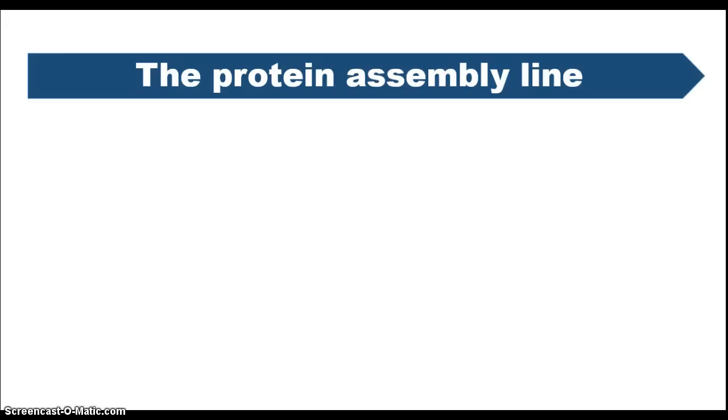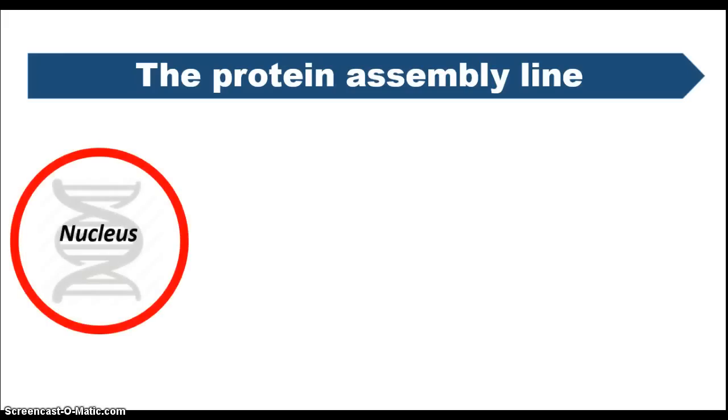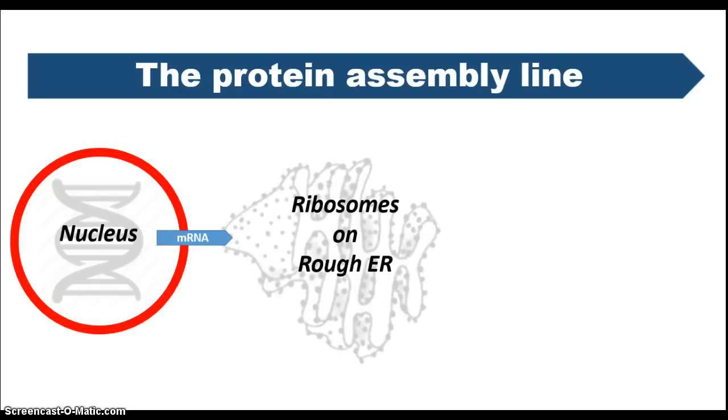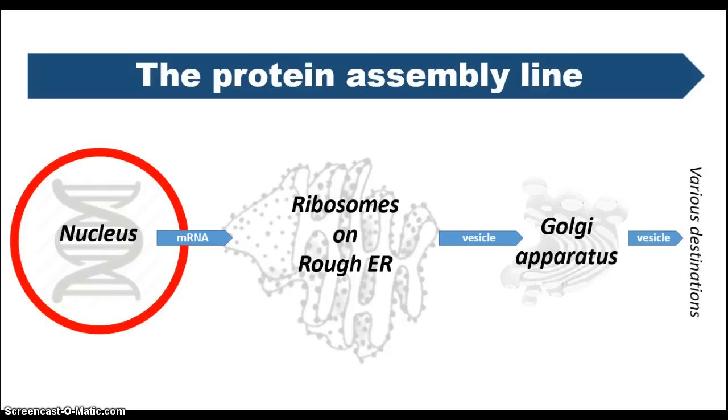There are several organelles involved in making proteins. The instructions for making proteins found in genes or DNA in the nucleus are then sent in a copied form called mRNA to the ribosomes on the rough endoplasmic reticulum of the cell. The ribosomes themselves assemble the protein from component amino acids. Then they are sent in little vesicle transporters to the Golgi apparatus, and then from there by vesicle transport to various destinations around the cell.